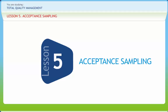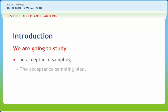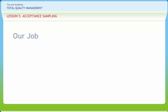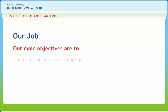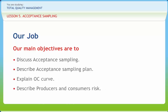Acceptance Sampling. We all know that a sample of product is used to determine acceptability. In this lesson, we will learn about Acceptance Sampling, Acceptance Sampling Plan, OC Curve, and Producer and Consumer Risk. After going through this presentation, you should be able to discuss Acceptance Sampling, describe Acceptance Sampling Plan, explain OC Curve, and describe Producer and Consumer Risk.